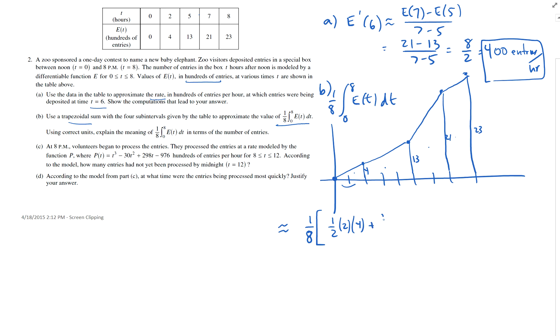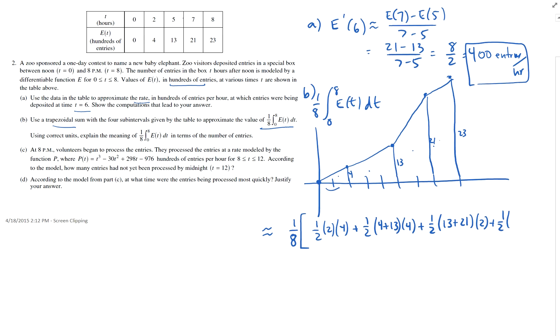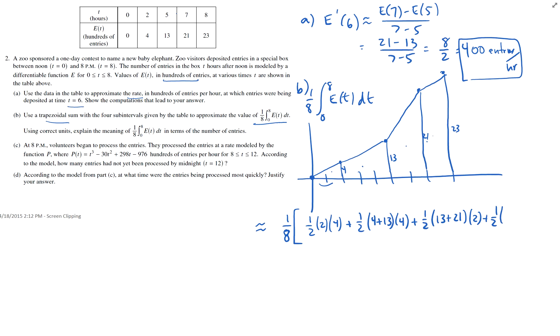This is 13, 21, 23. So, four, plus this guy right here, area of the trapezoid, one-half base one plus base two, two, four, four plus 13 times the height, which is four, plus one-half base one plus base two times the height, two, plus one-half times base one plus base two, 21 plus 23 times one.